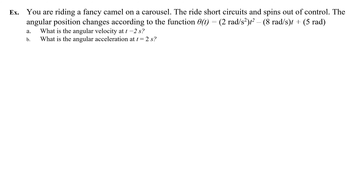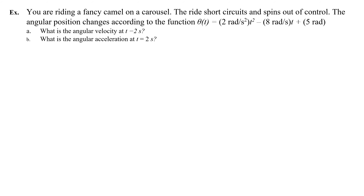Let's do some example problems. You are riding a fancy camel on a carousel. The ride short circuits and spins out of control. The angular position changes according to the function theta equals 2 radians per second squared times t squared, minus 8 radians per second times t, plus 5 radians. What is the angular velocity at 2 seconds, and what is the angular acceleration at 2 seconds?